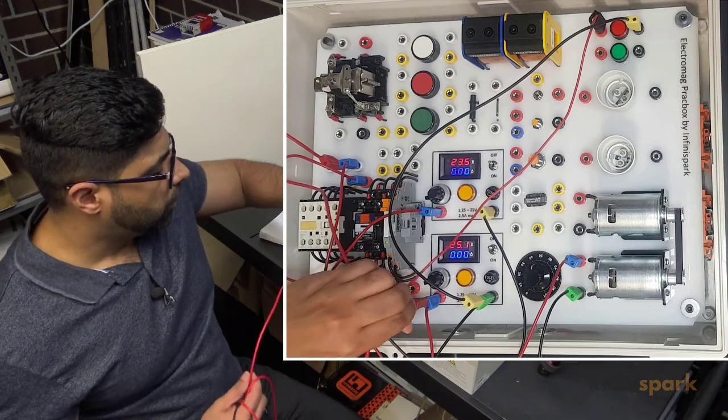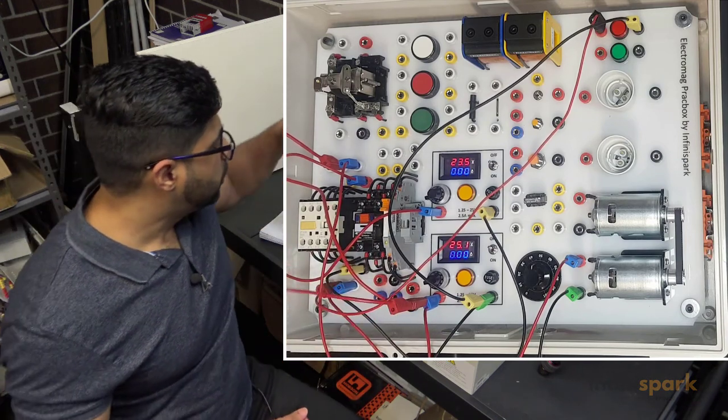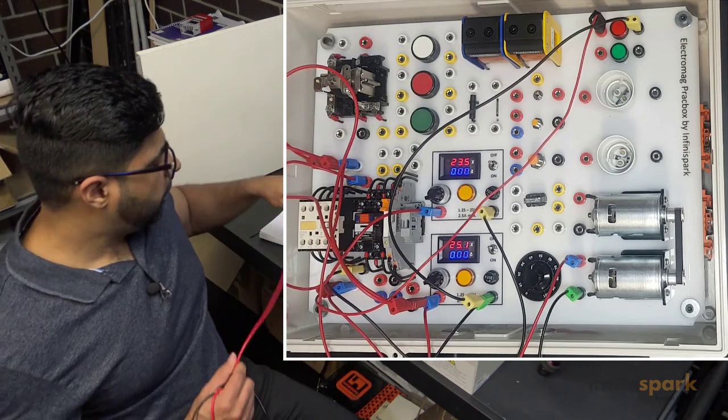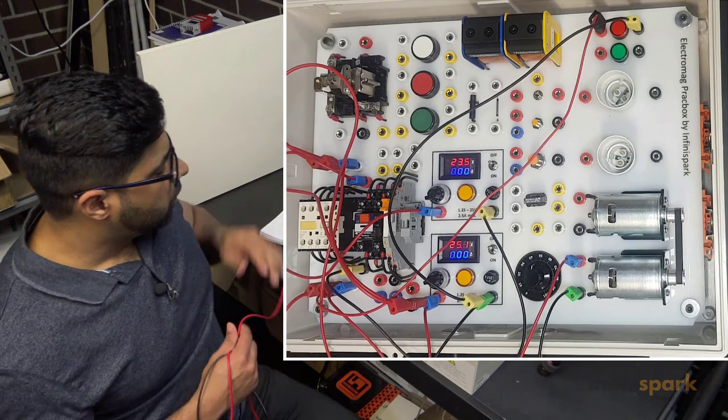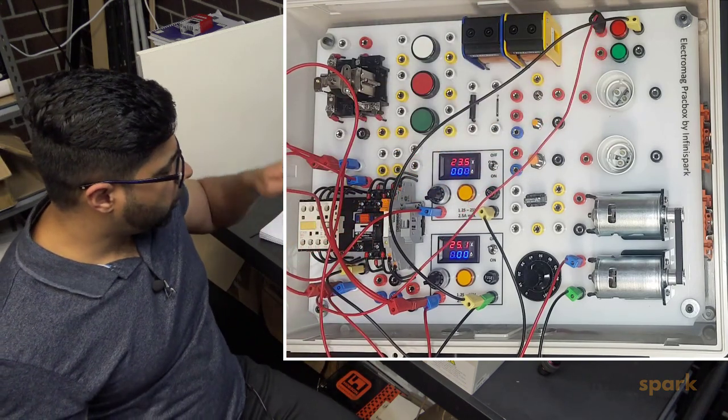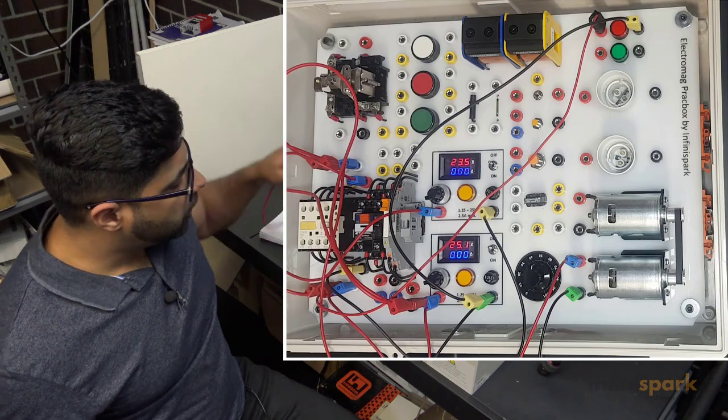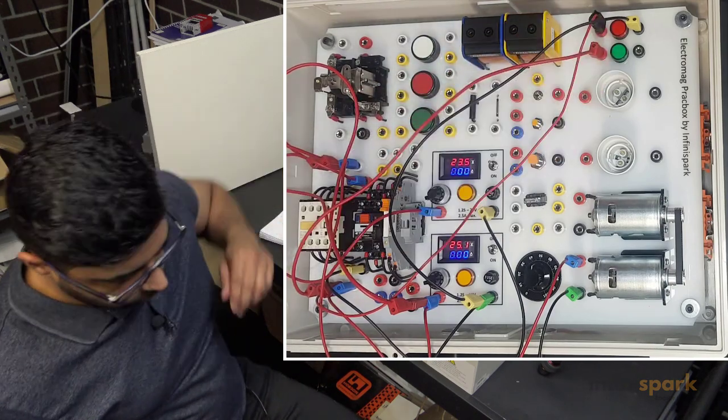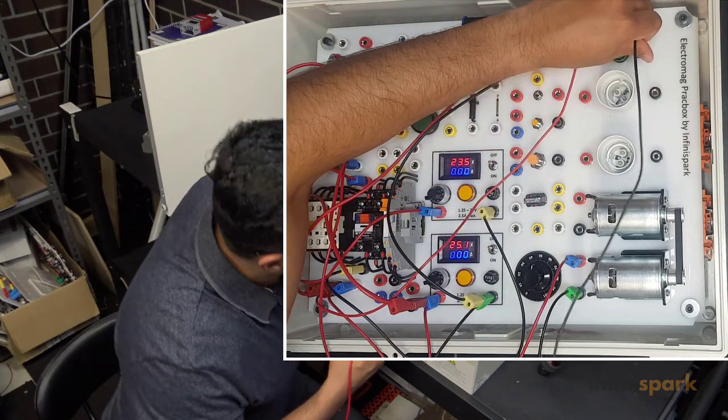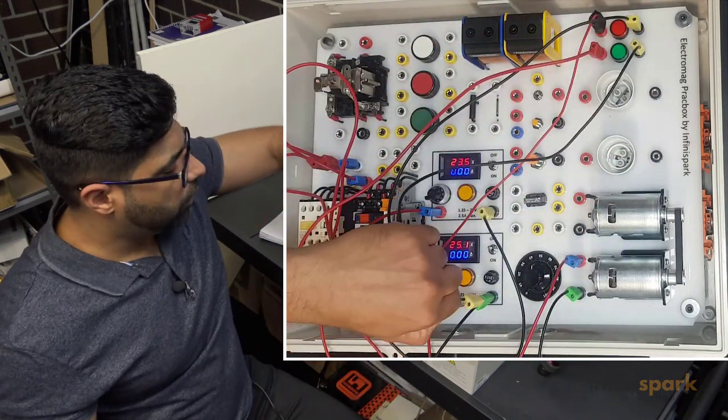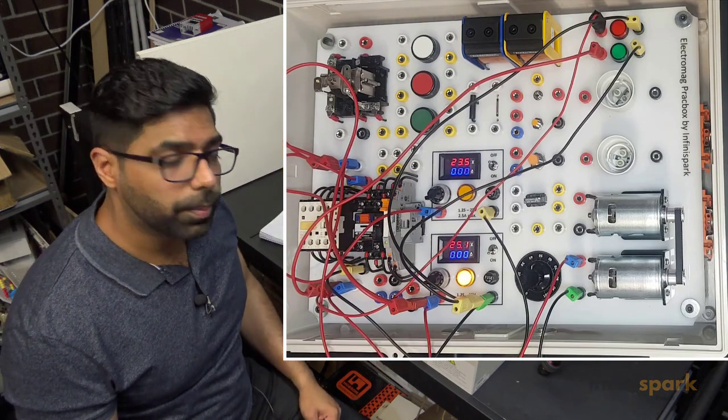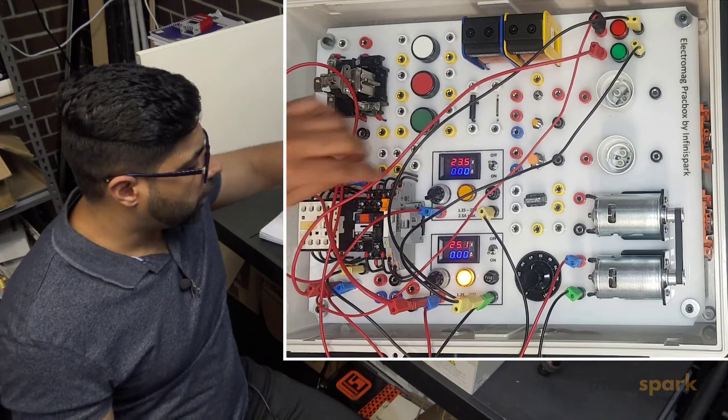Positive goes to line one—sorry, that was line one. Positive went to line one, and T1 is going to the green LED. The negative of the green LED finishes here. So when I turn this on, nothing happens. Now let's see what happens when I turn the contactor on.